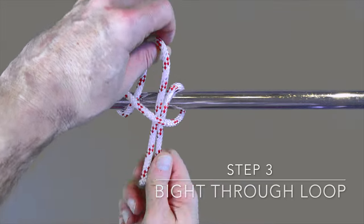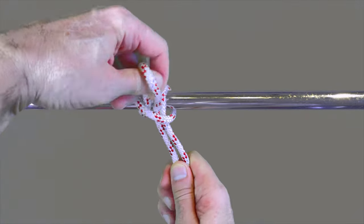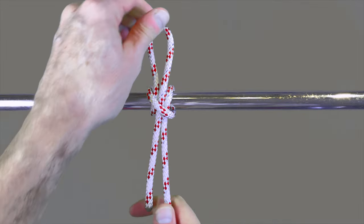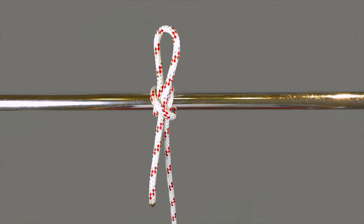Step three: take the bight up through the loop you created in steps one and two, and tighten to secure the hitch.